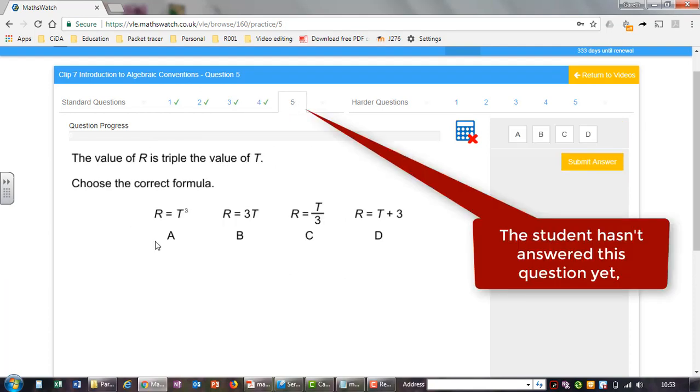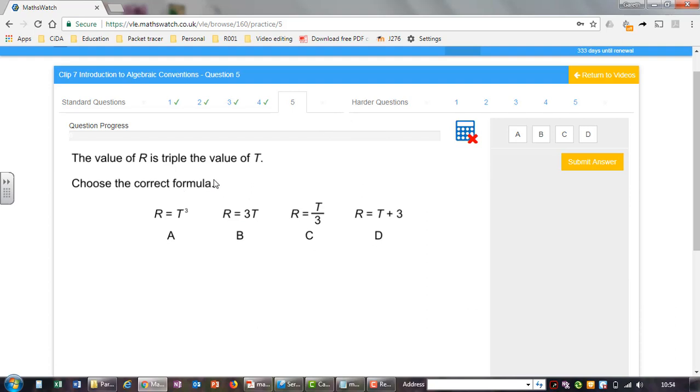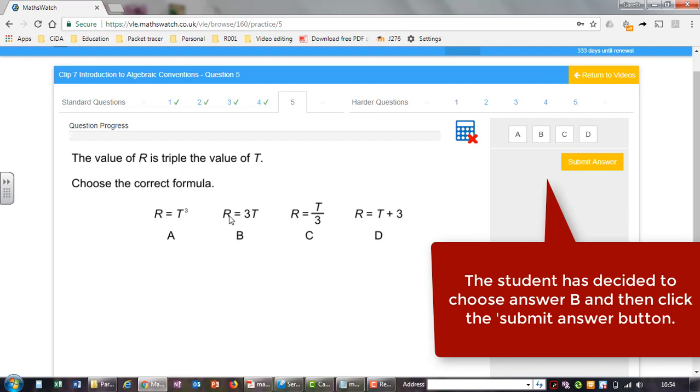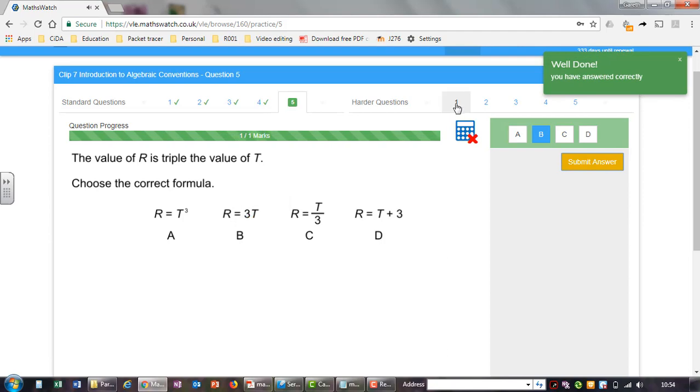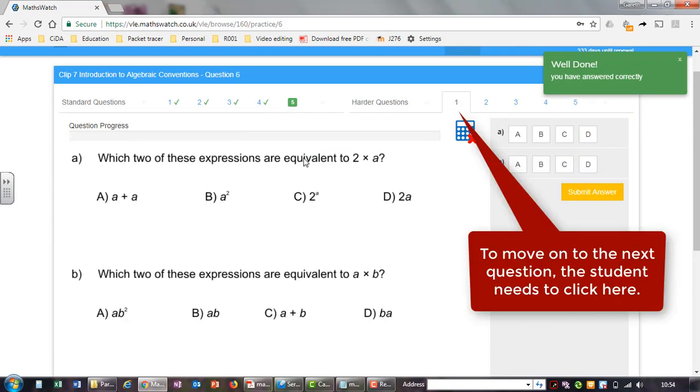The student hasn't answered this question yet. The student has decided to choose Answer B and then click the Submit Answer button. The student has chosen the correct answer and parts of the page turn green. Well done. To move on to the next question the student needs to click here.